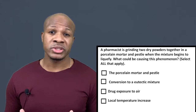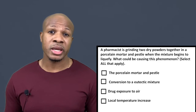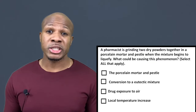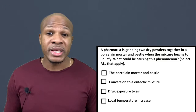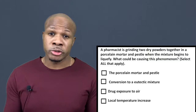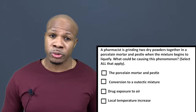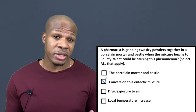When the properties of multiple solids change when combined, that's a eutectic property. A eutectic mixture occurs when you combine different solids and the melting point of the combination ends up lower than the melting point of any individual powder. For example, if one powder melts at 105°F and another at 120°F, but together they melt at 95°F — that's a eutectic mixture. So conversion to a eutectic mixture is definitely one correct answer.